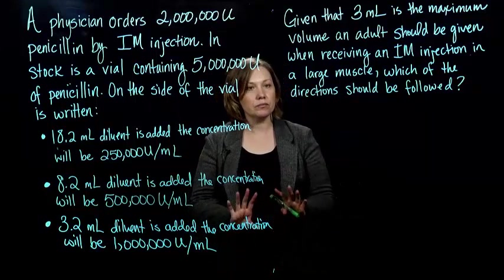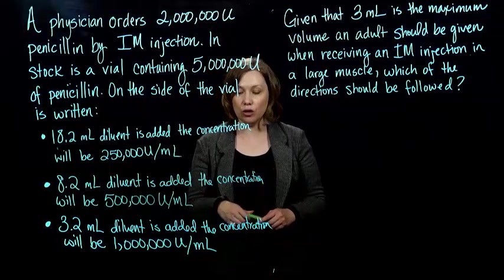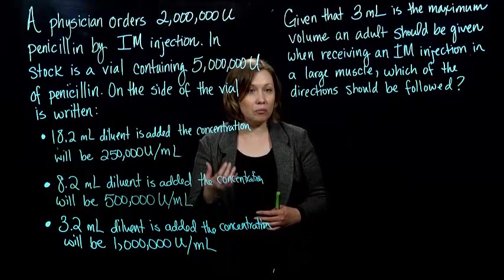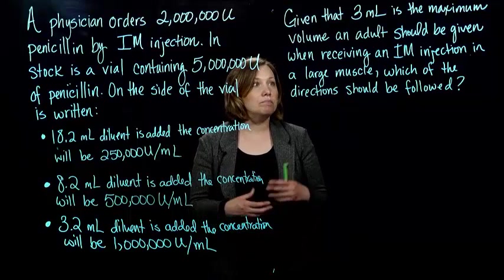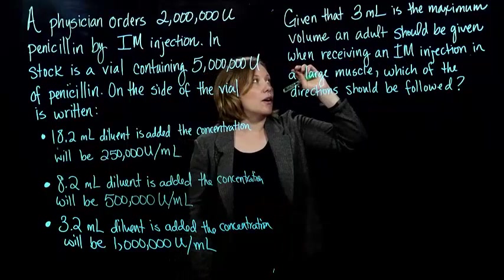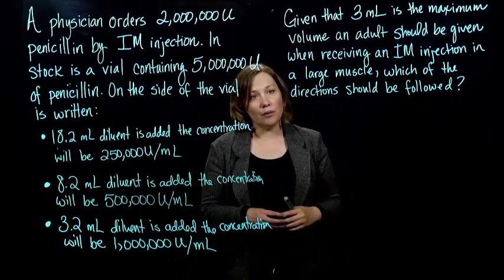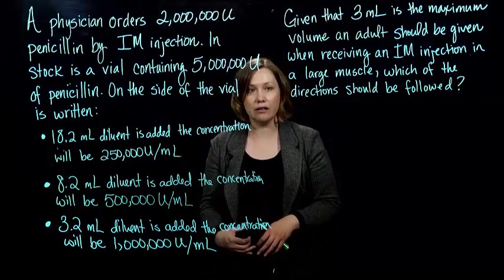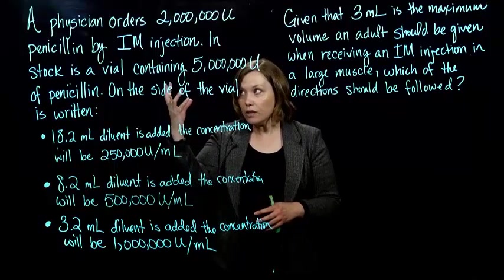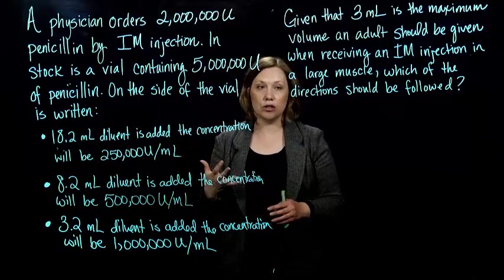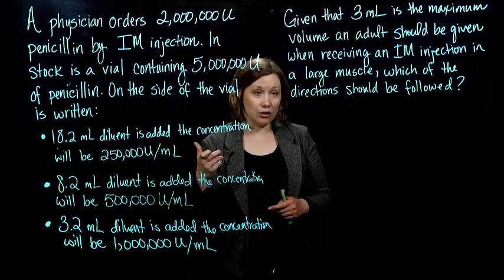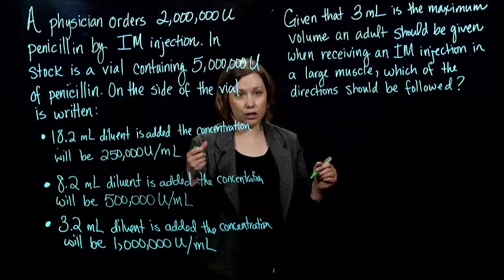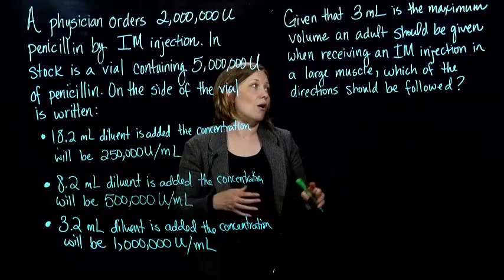The problem is we have to decide which one of these to use. The constraint is 3 milliliters is the maximum volume an adult should be given when receiving an IM injection in a large muscle. So based on that, we have to decide how we're going to dilute this vial of penicillin. All we have to do is figure out for each concentration how many milliliters we would be administering, and then decide which one is less than our 3 milliliters.